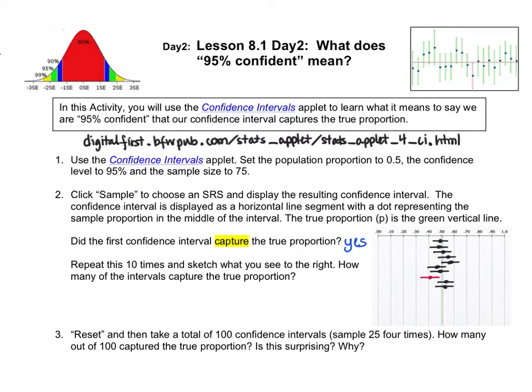We know that sampling variability exists, so we know that every single time we get a sample, we get what we get. And when we build the interval around it, we're each going to have a different combination of 10 samples and 10 intervals. Out of the 10 samples that I collected, nine of them captured or included the true population proportion, which is represented by that green vertical line at 0.50.